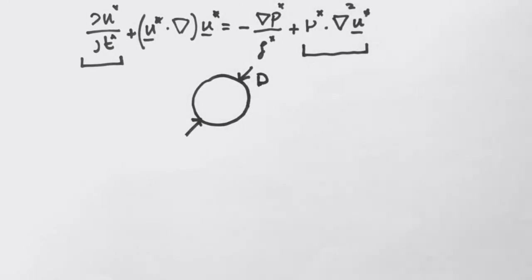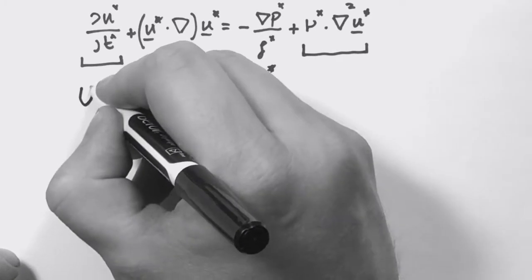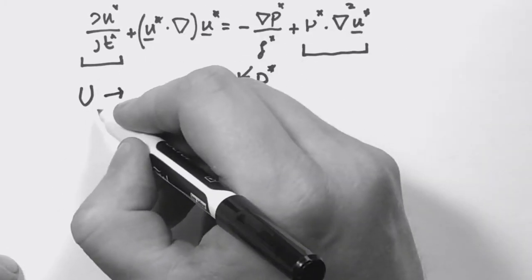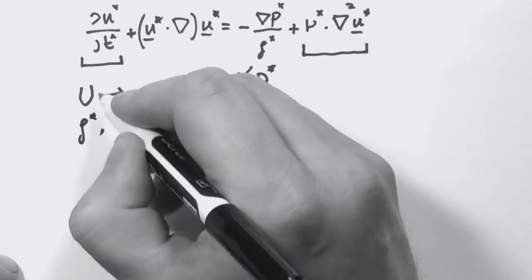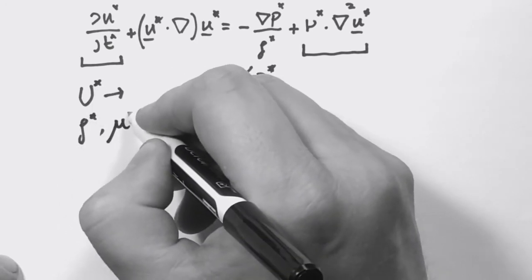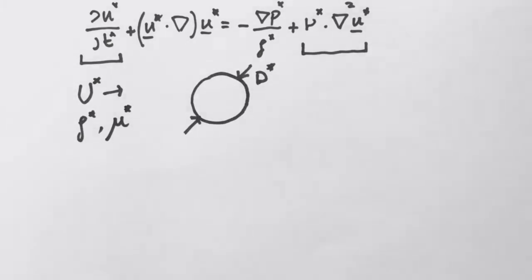The characteristic length would be the diameter D of the sphere, and then we have a velocity U, uniform velocity here, and the flow has a density ρ and kinematic viscosity ν.